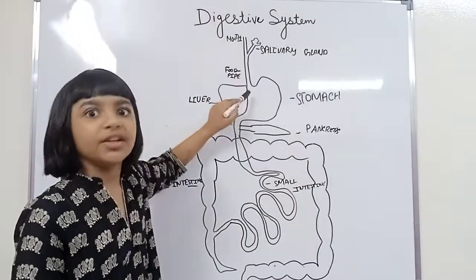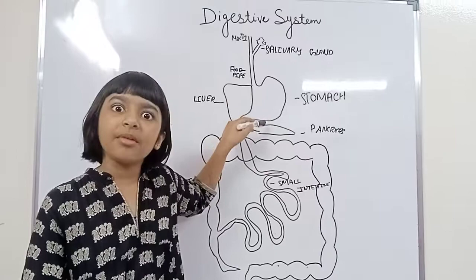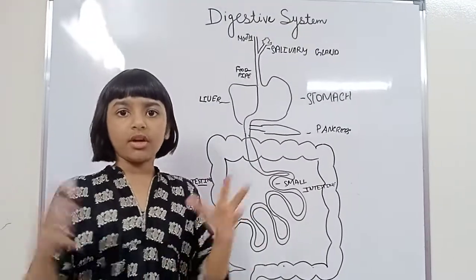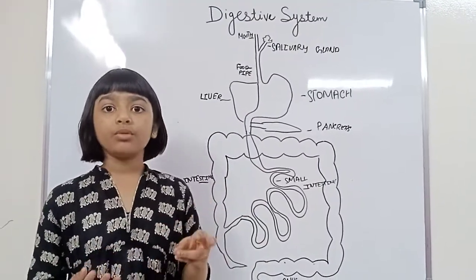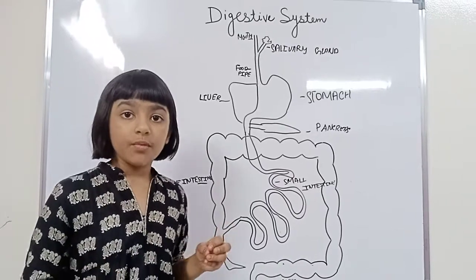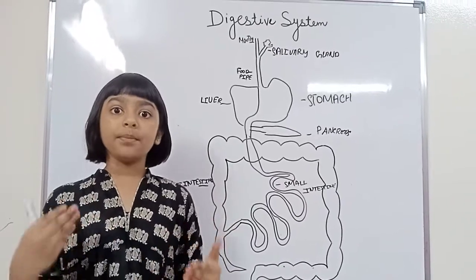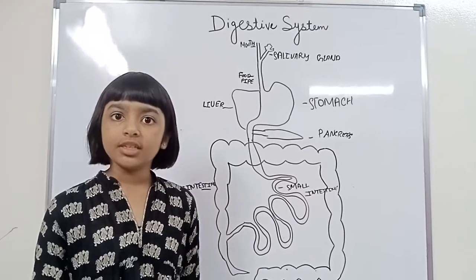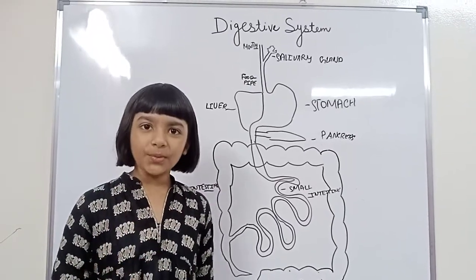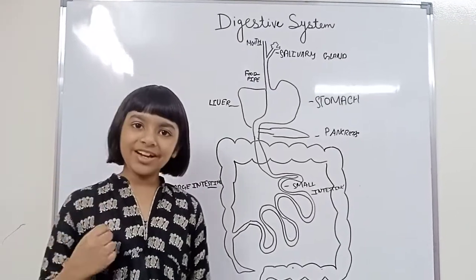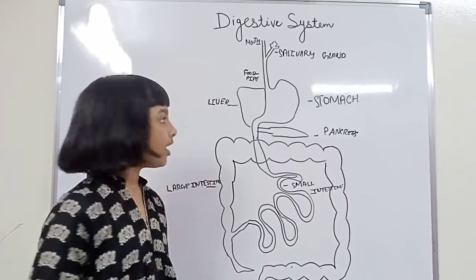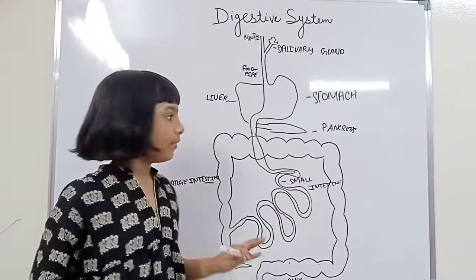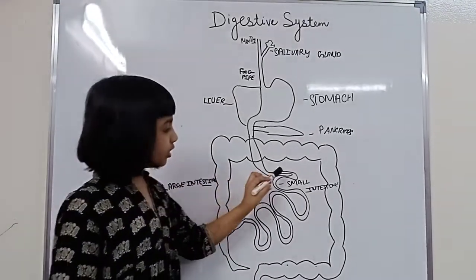Then it will go through your food pipe into your big stomach, where all the food is crunched and it will form into a digestive juice, which will start the breakdown of proteins. Protein is found in our food. It will give us energy and it will turn the food into a simpler form.